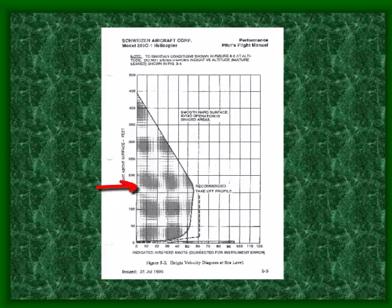Looking at the Schweitzer, you'll see two shaded areas: the upper shaded area and the lower shaded area. On your checkride, the examiner is going to ask you to pull out the height velocity diagram and explain what's important about it. You want to avoid both areas. In general, no matter what you're flying, they all look pretty similar — they change a little bit.